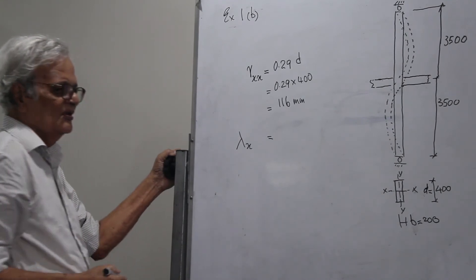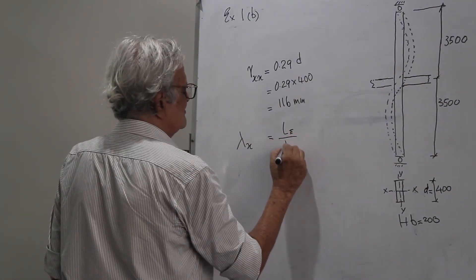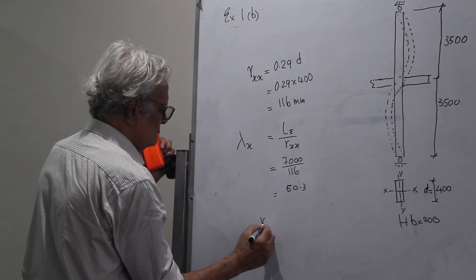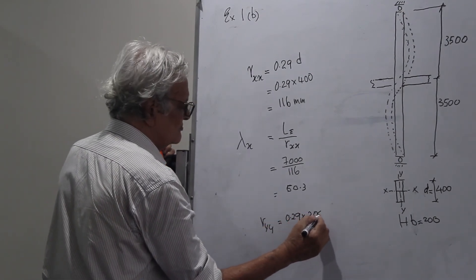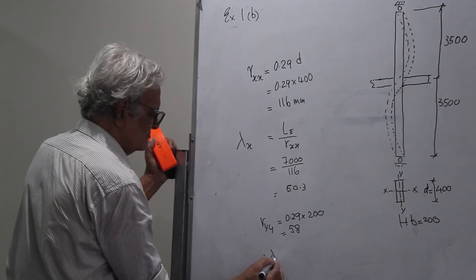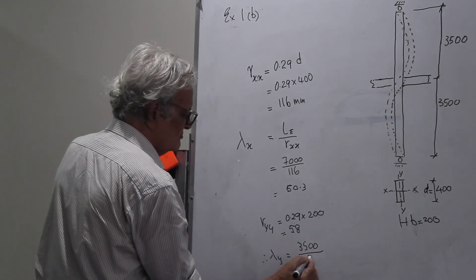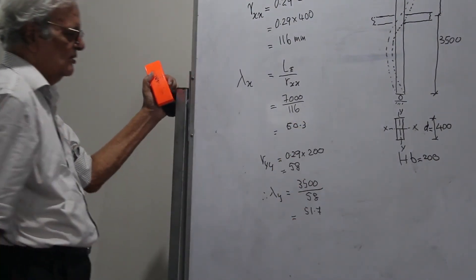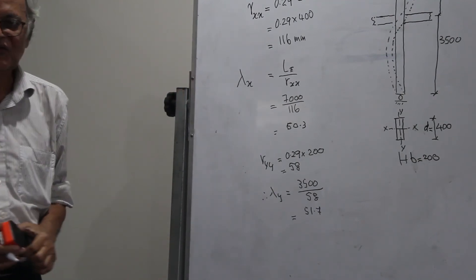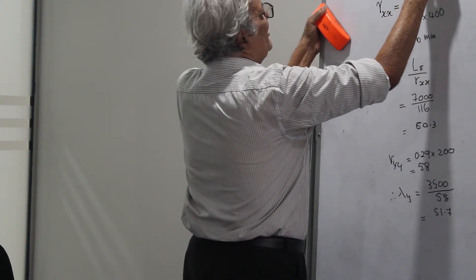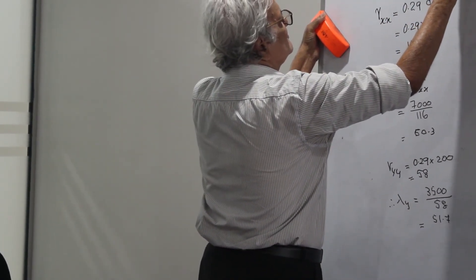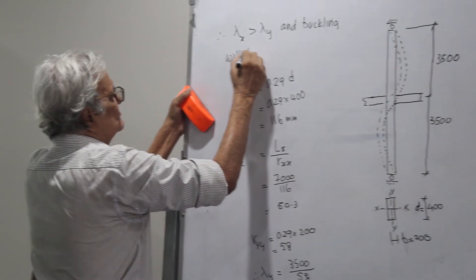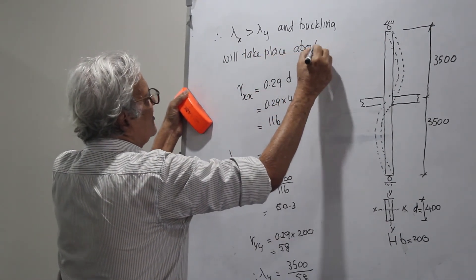Lambda x equals effective length over r-axis. Therefore, Lambda x is greater than Lambda y and buckling will take place about the x-axis.